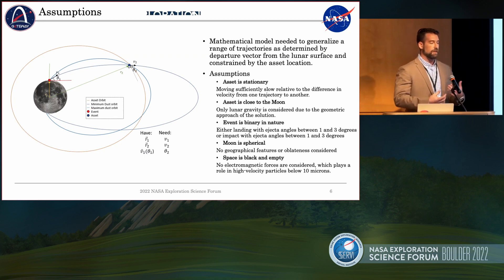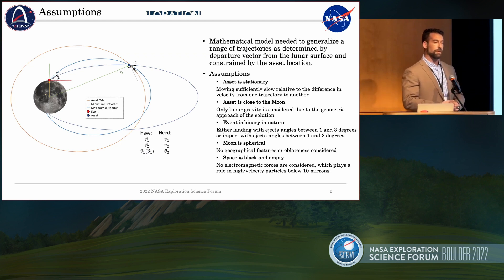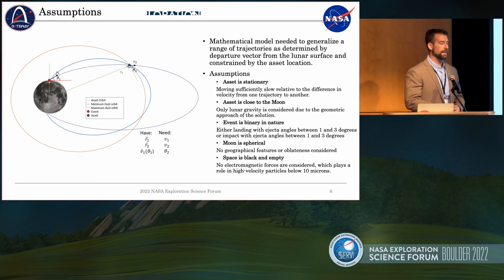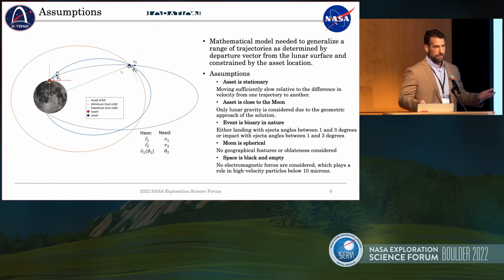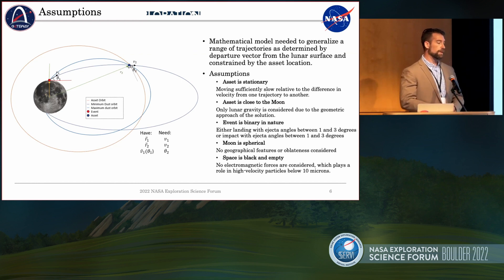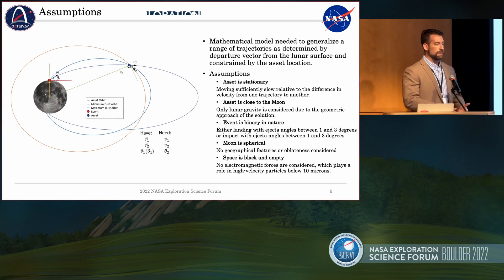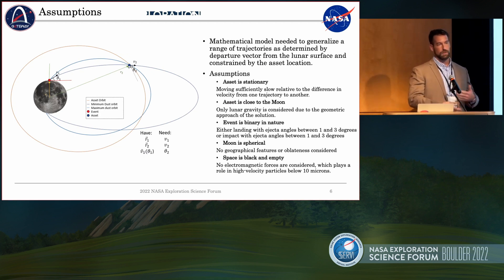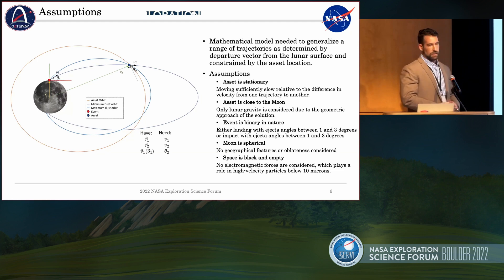Without going too deep into the mathematical modeling, it really comes down to working with Keplerian dynamics to better understand where the dust is going to go and how it's going to impact your asset. We started with an event on the surface — that red dot at the top of the moon — and an asset in orbit, the blue dot. The physics apply the same whether on the surface or in orbit. For landing events, the theta-1 angle is between 1 and 3 degrees based on Apollo data, and for impacts, it's 0 to 45 degrees.